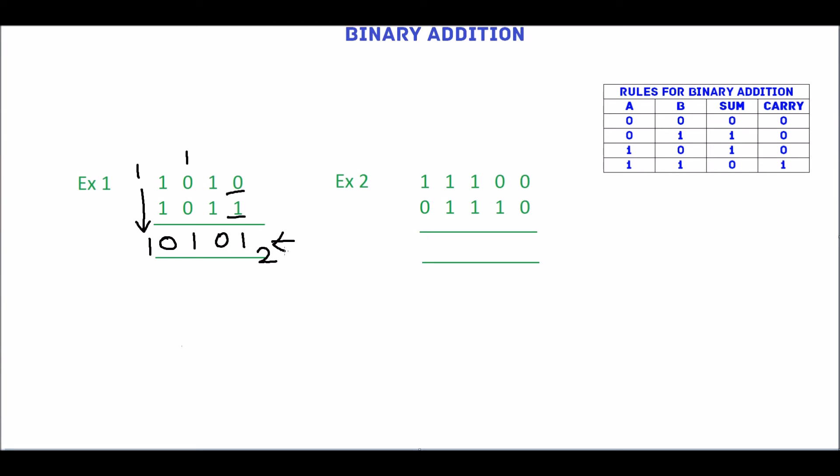Next we will move to example 2. Start with rightmost digits which are 0 and 0. 0 plus 0 is 0. 0 plus 1 is 1.